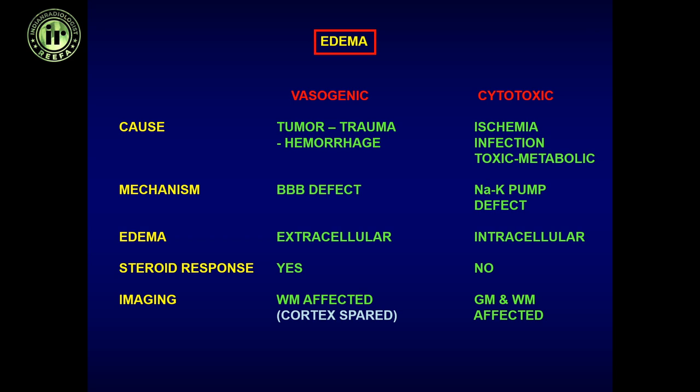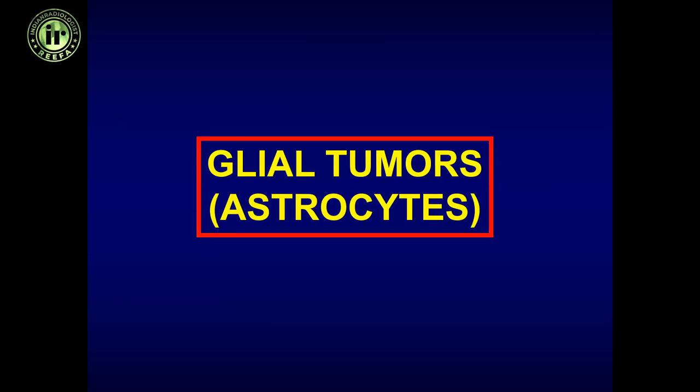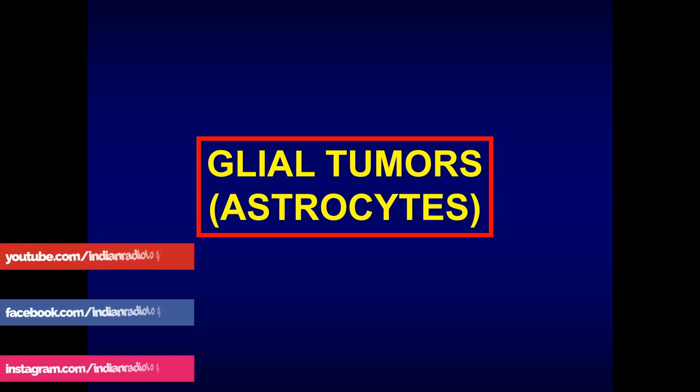Tumors cause vasogenic edema. You have to differentiate between vasogenic edema and cytotoxic edema. Cytotoxic edema involves a sodium-potassium pump defect responsible for it — seen in ischemia, infection, toxic-metabolic conditions. Vasogenic edema results from an abrupt insult to the brain such as trauma, tumor, or hemorrhage; the mechanism is a defect in the blood-brain barrier. The edema tends to be extracellular, responds very well to steroid treatment, and the cortex is generally spared.